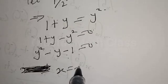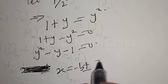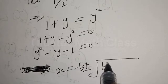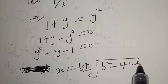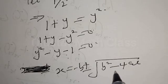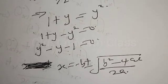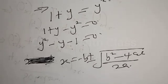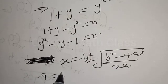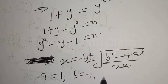Using the quadratic general formula: x equals negative b plus or minus square root of b squared minus 4ac, all over 2a. Our coefficients are: a equals 1, b equals negative 1, c equals negative 1.